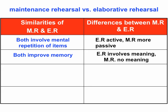Maintenance rehearsal is a passive process where we're simply sub-vocalizing in the case of auditory information in order to retain it in short-term memory. Both can lead to encoding, although it's far more likely with elaborative rehearsal. However, some information using maintenance rehearsal can eventually be encoded — for instance, if you say a phone number enough times in your head, eventually that will stick if you can avoid interference.